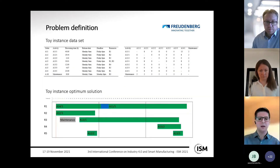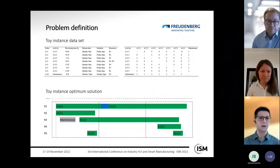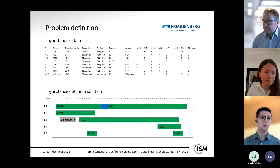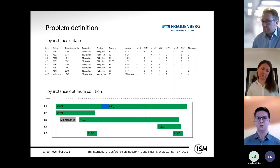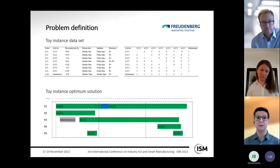To illustrate the practical planning problem, a toy instance was developed. The dataset shown in two tables at the top of the slide includes orders comprised of one or more activities, each with a specific processing time, release date, deadline, and one or more alternative resources. Additionally, a changeover matrix contains all sequence-dependent setup times between the different work activities.